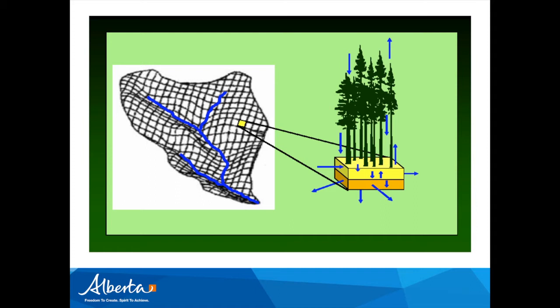The way trees influence all these processes is that they help with interception, but they also take up water from the ground for photosynthesis. Not all the water they take up is used for photosynthesis — some is transpired back into the atmosphere. So the component of the water balance that is most influenced by trees is evapotranspiration, which in certain landscapes is the biggest component of all the processes. When you cut a tree, you change the water balance completely.